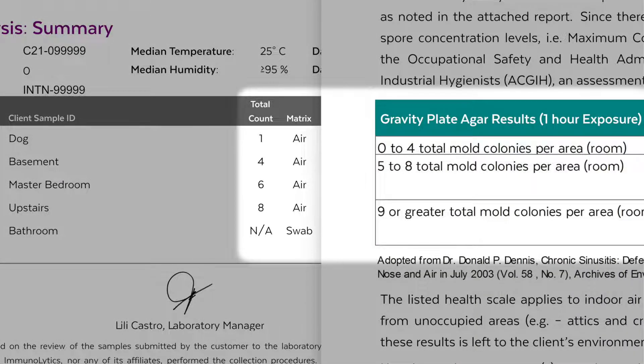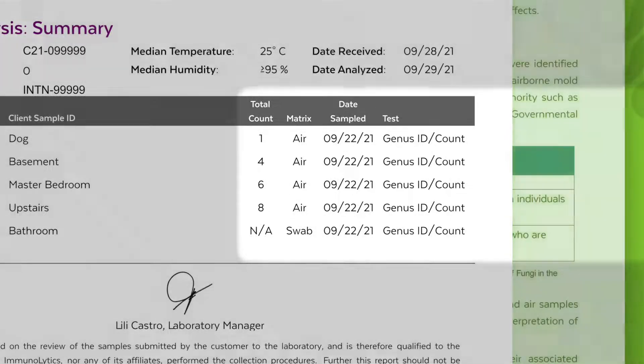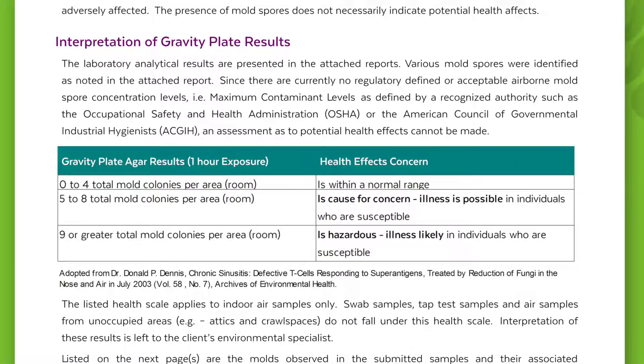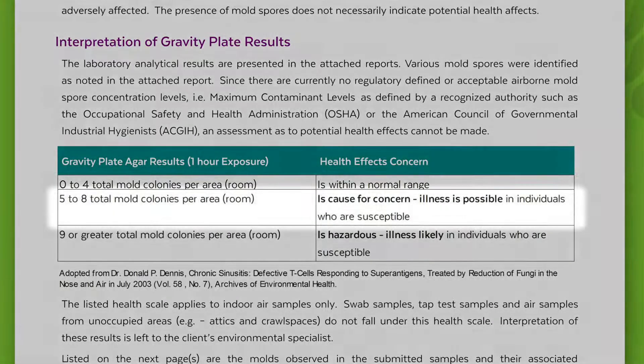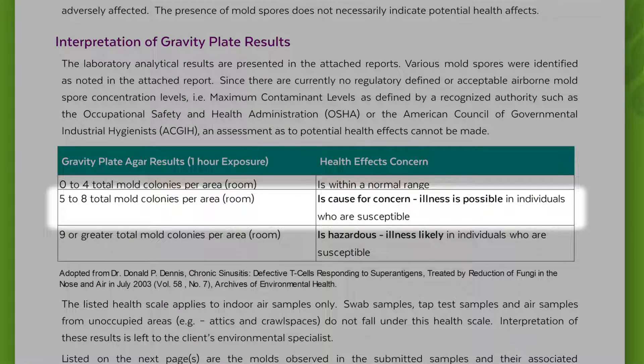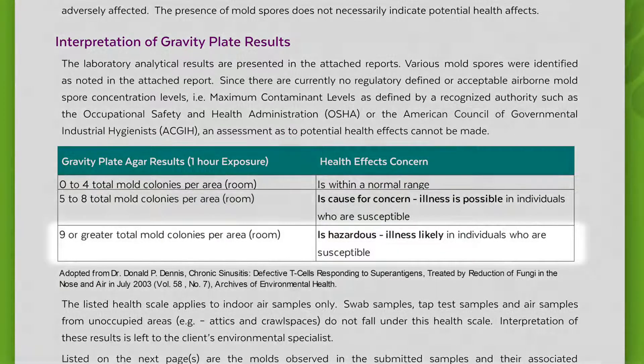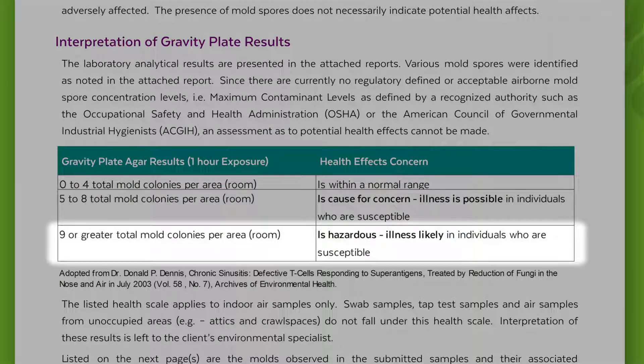This indicates how someone's health could be impacted by the mold detected in the area sampled. On the health scale a total colony count of 0 to 4 is considered normal or with an acceptable range for most of the population. A total colony count of 5 to 8 could be causing illness to any of the occupants that are most susceptible. A total colony count of 9 or more could be hazardous to someone that is mold susceptible.